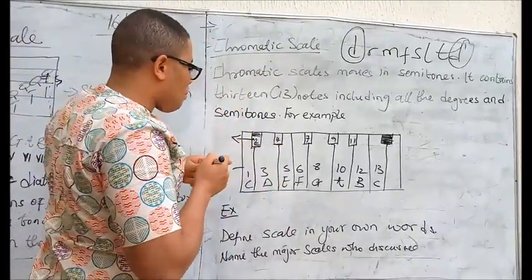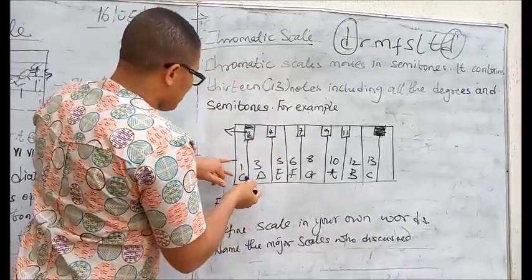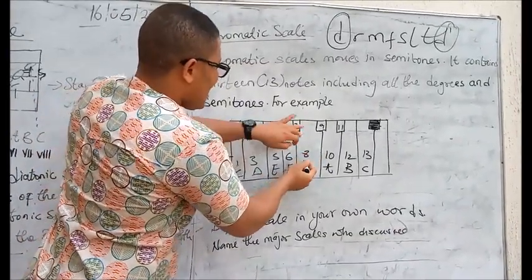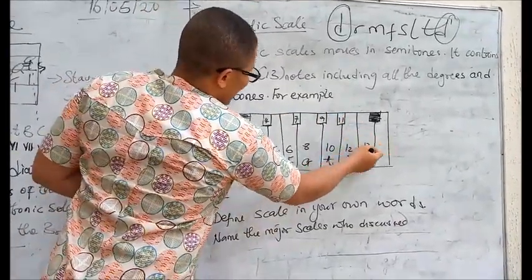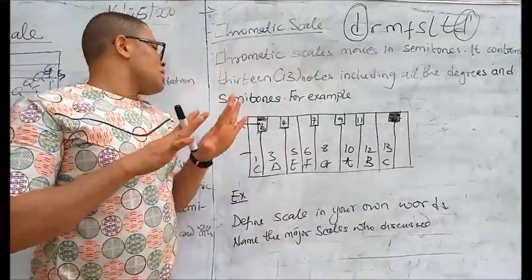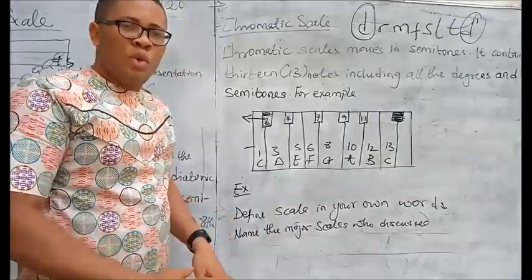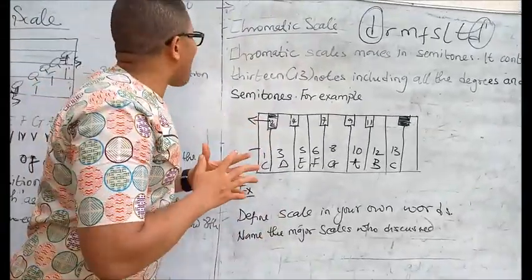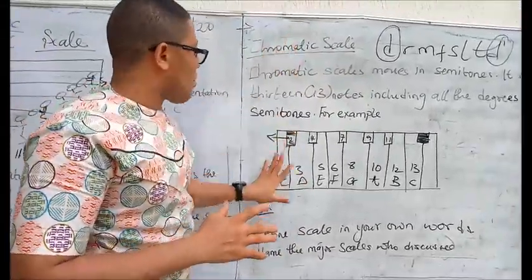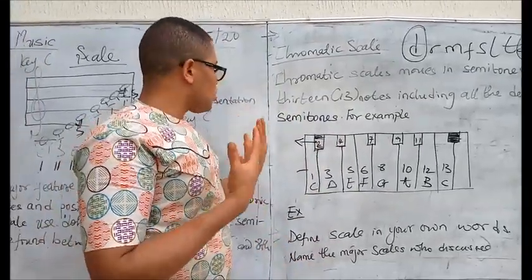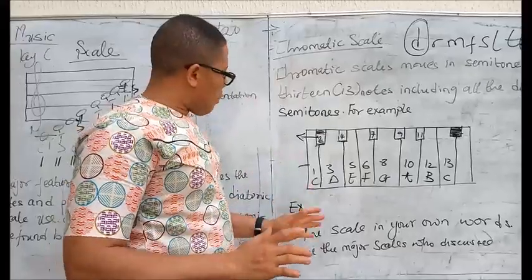You can now count it: 1, 2, 3, 4, 5, 6, 7, 8, 9, 10, 11, 12, 13. Once this pandemic is over and you are back to school, we will do an elaborate explanation of this chromatic scale with the use of piano or melodeon for you to understand more.